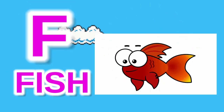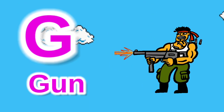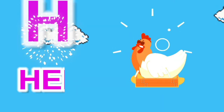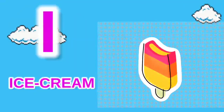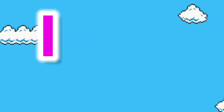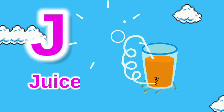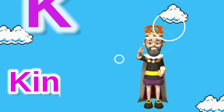F for fish, G for gun, H for hen, I for ice cream, J for juice, K for king.